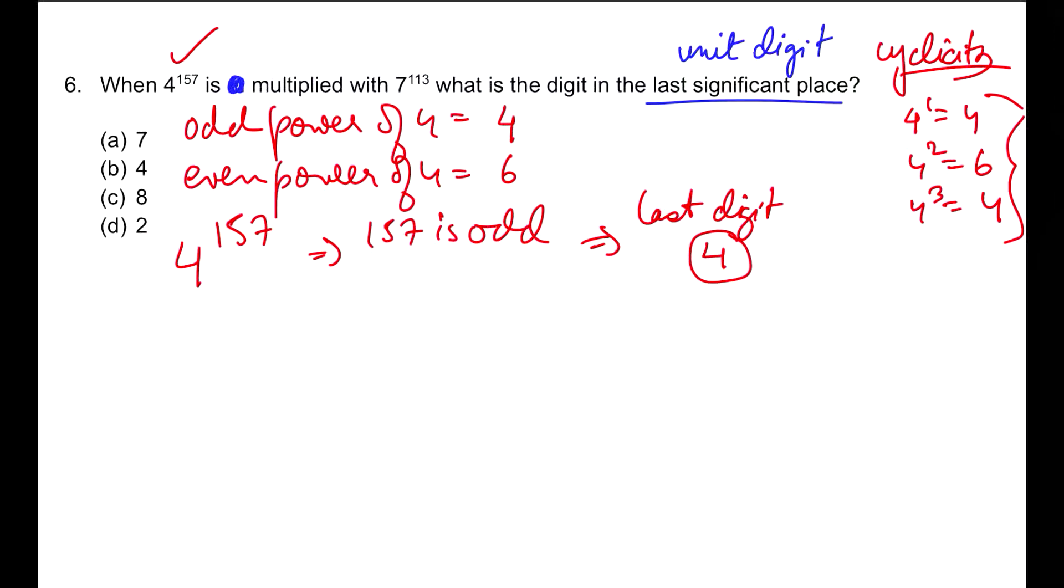Coming to 7. 7¹=7, 7²=49 ending in 9, 7³=343 ending in 3, and 7⁴ I believe is 2401, ending in 1. After that, 7⁵ will again get a 7. So the cyclicity of 7 is 7, 9, 3, 1.